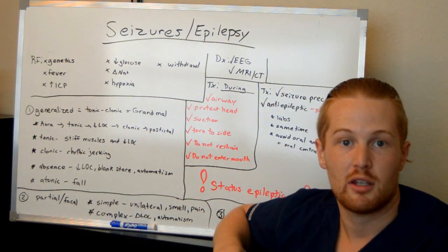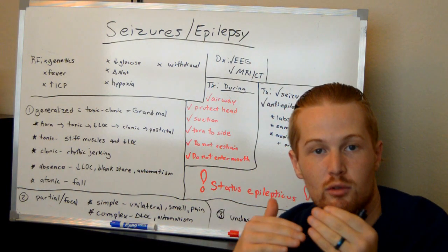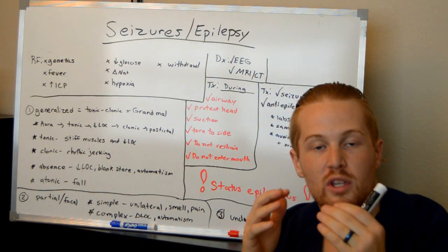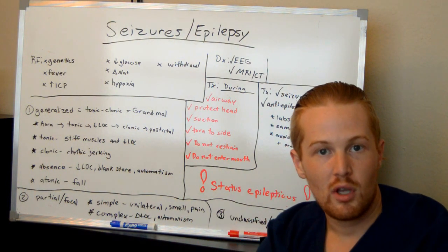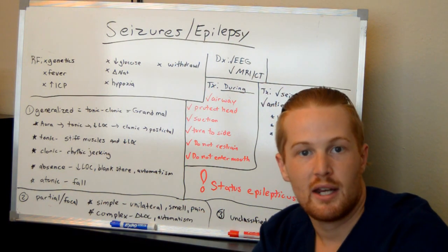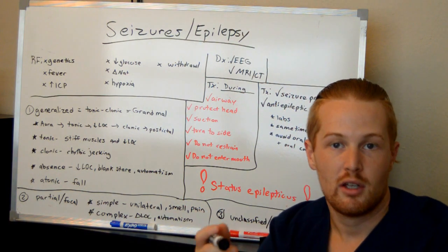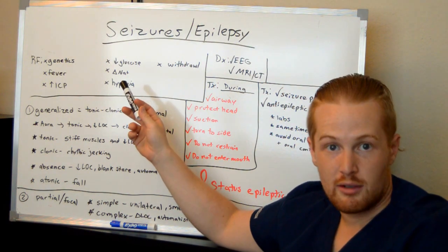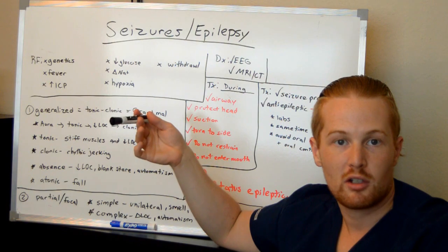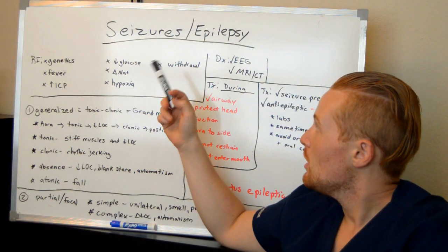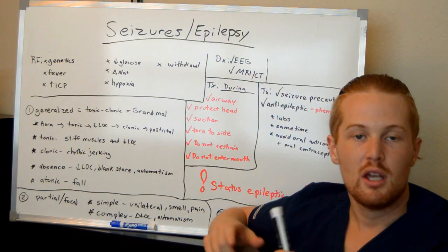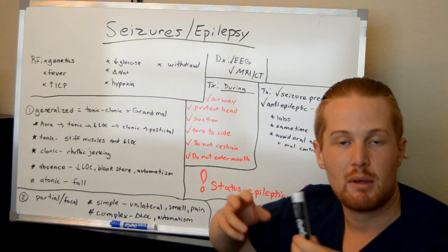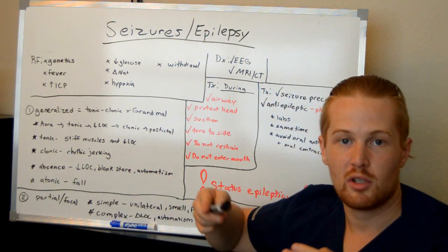Changes in sodium levels in the body also matter. The brain and the blood are separate, and when you have changes in sodium in the blood, it causes changes in how much fluid is in the brain — either too much or not enough — and can lead to seizures. Low oxygen levels, or hypoxia, can cause a seizure. And withdrawals — from alcohol, drugs, or stopping anti-seizure medications — can also cause seizures.